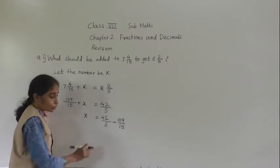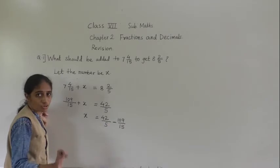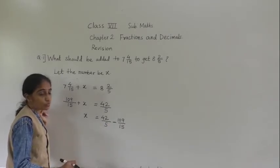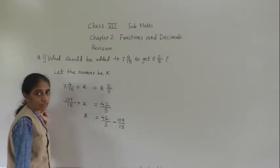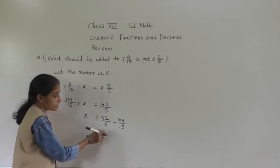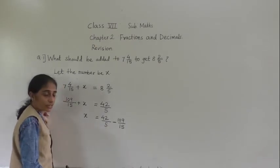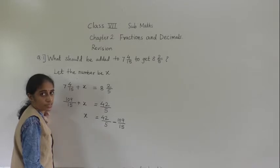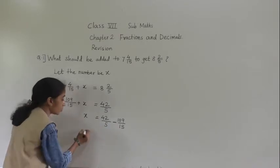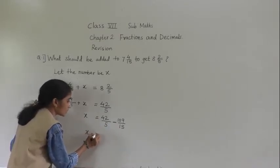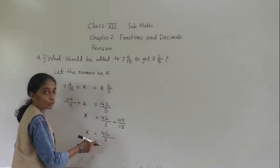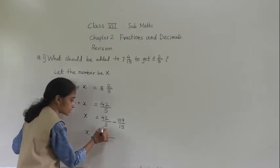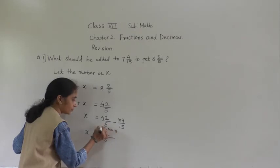We can't do the subtraction directly because denominators are not same, so we need to make it same. We need the LCM of 5 and 15. LCM is 15 — in the 5 times table, 15 is there. So LCM is 15.